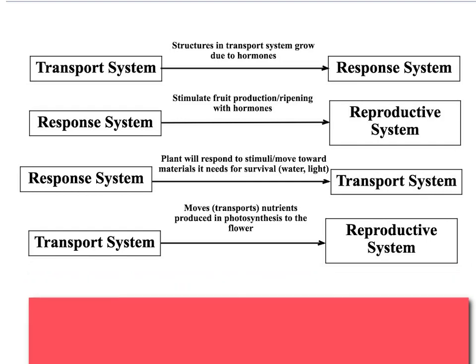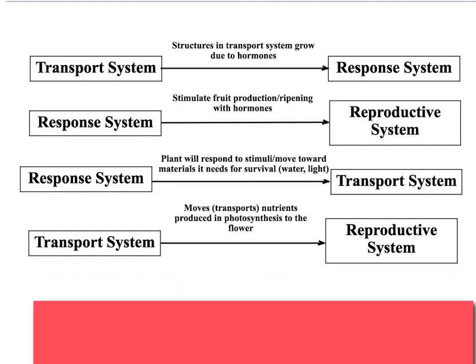The last interaction is the transport system and the reproductive system. The transport system is going to move or transport nutrients produced in photosynthesis to the flower. The whole point of the flower is to produce a well-maintained reproductive organ that has all the nutrients it needs. It gets its nutrients because of the transport system — it has to move the food it makes, glucose, to the cells in the flower to produce a good, healthy reproductive organ.